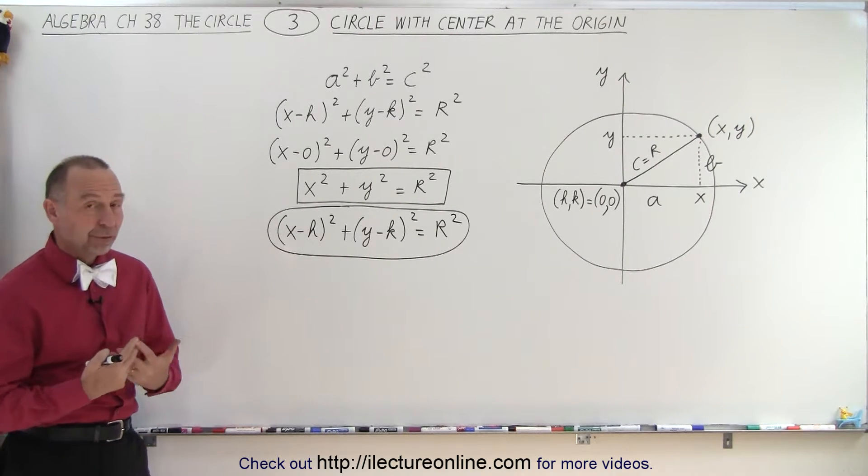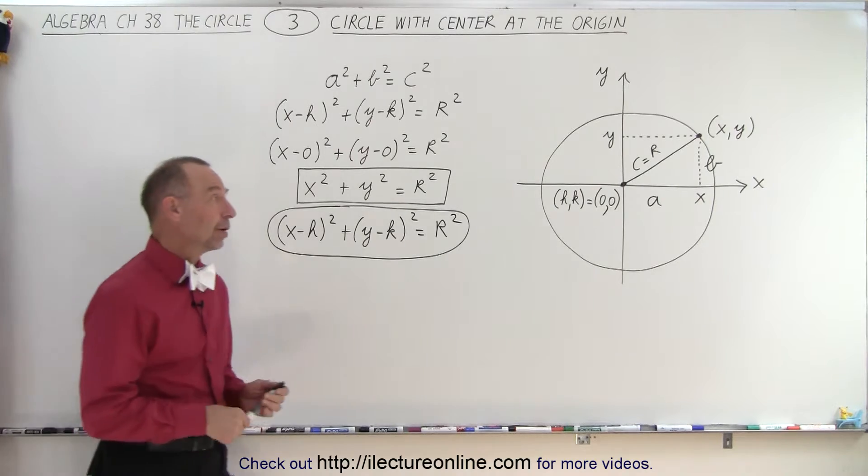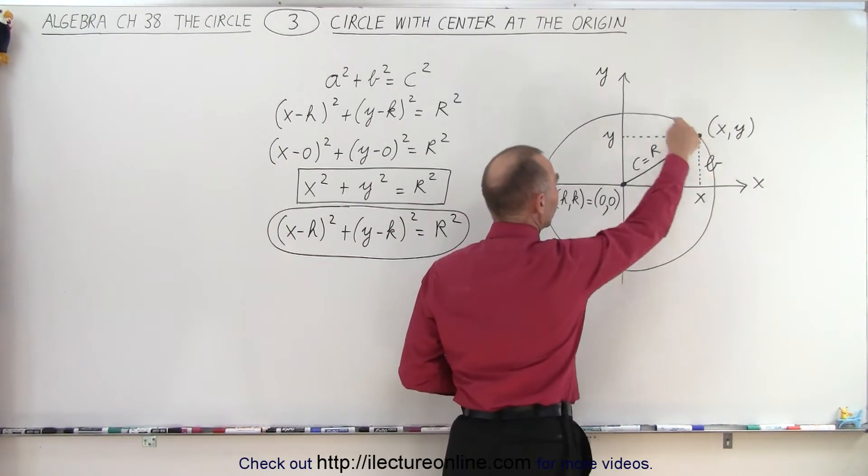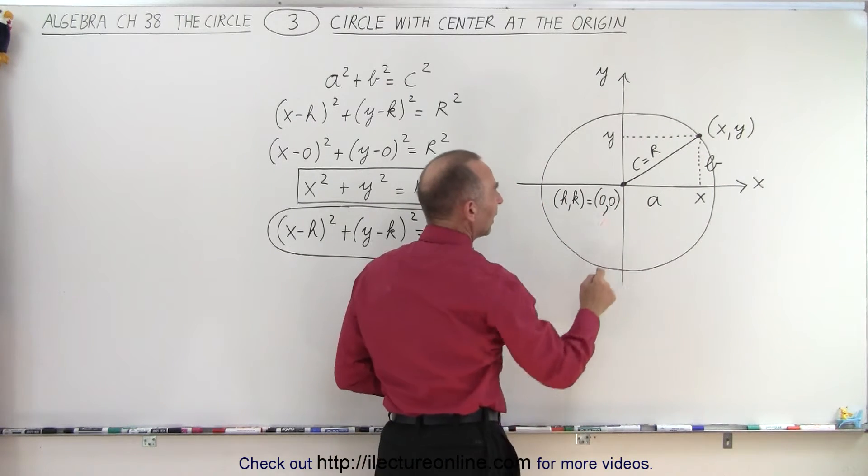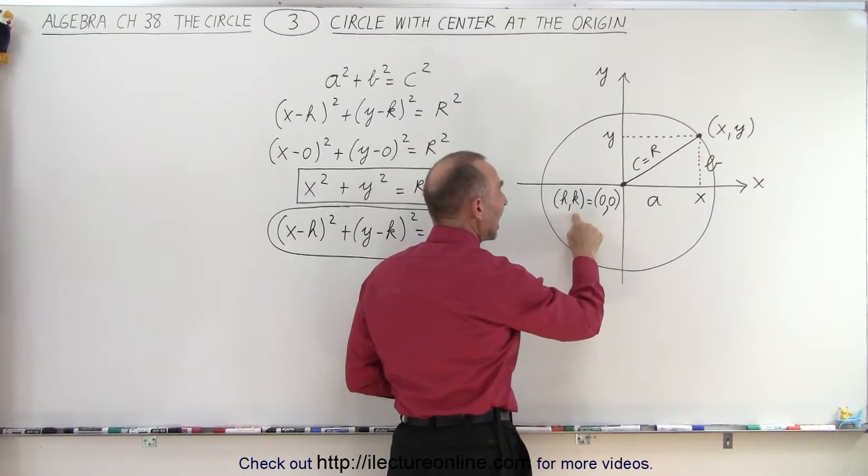Again we use the principle of the Pythagorean theorem. We understand that there's a point somewhere on the circle, and no matter where that point is, we can give it coordinates x and y, and of course the coordinates of the center are h and k.